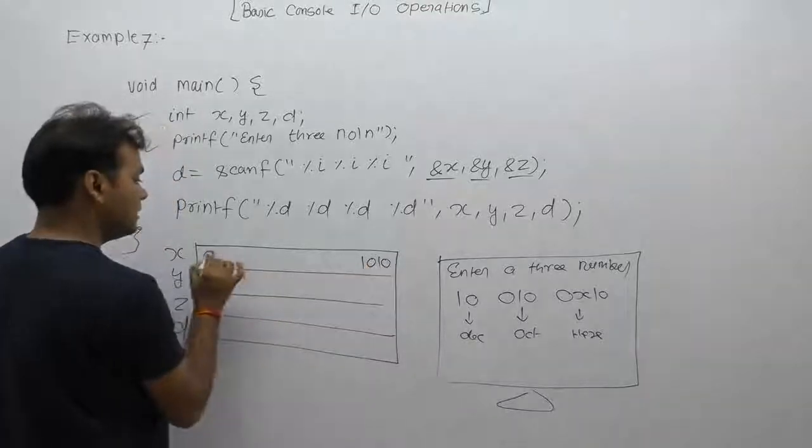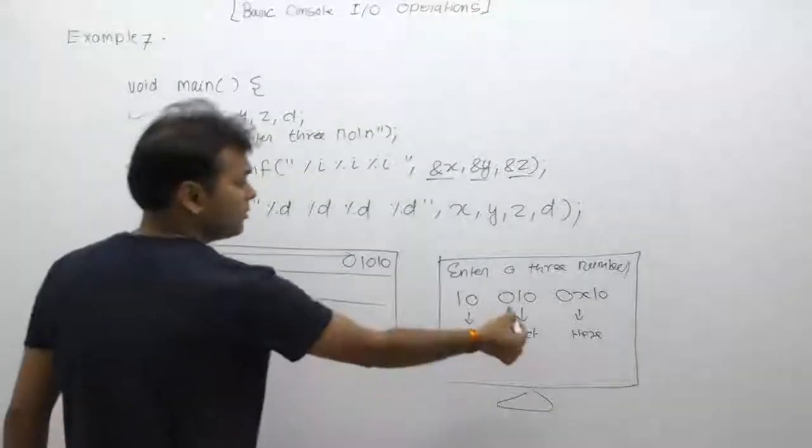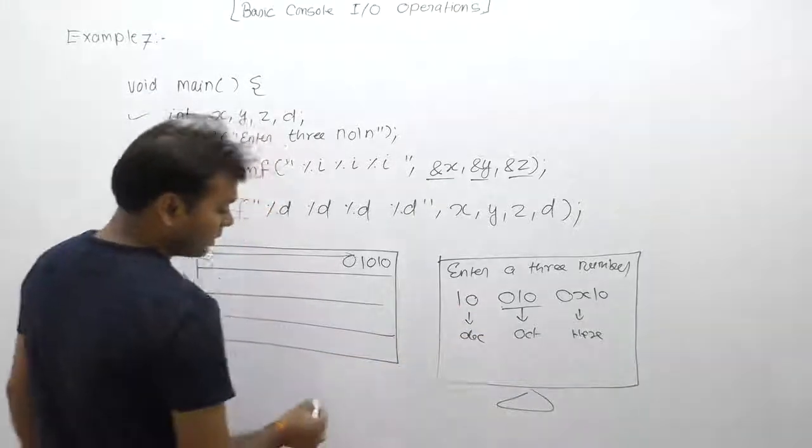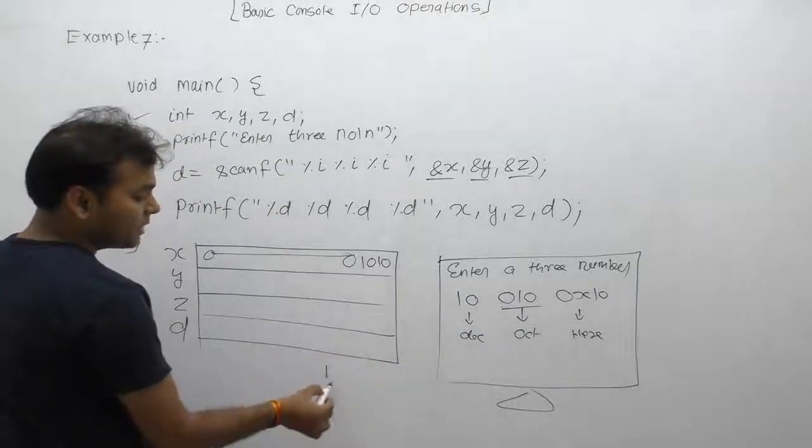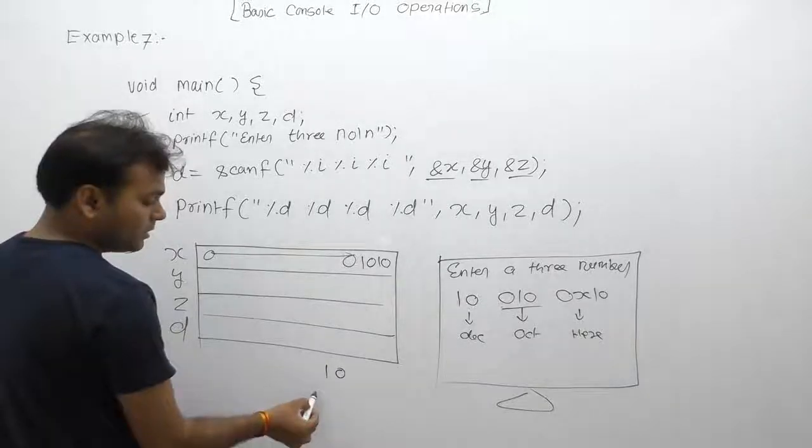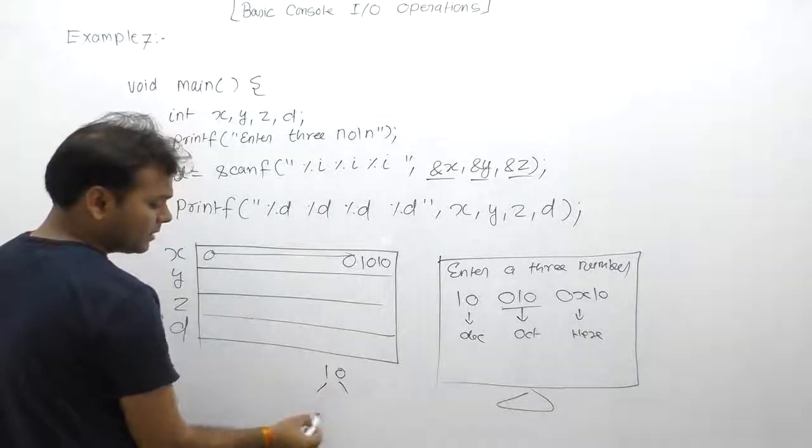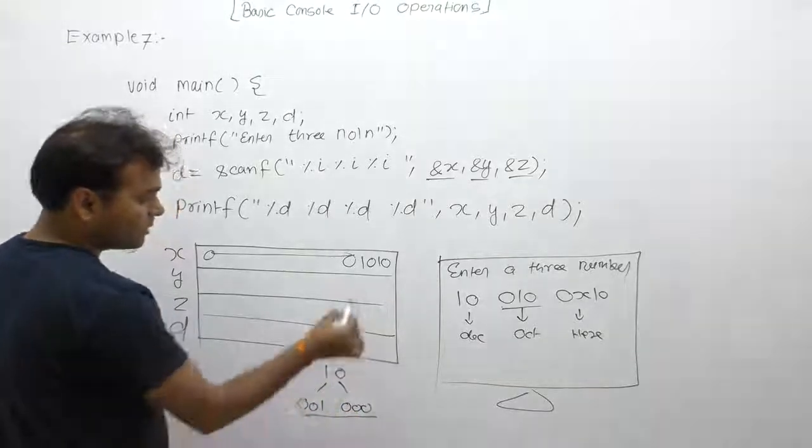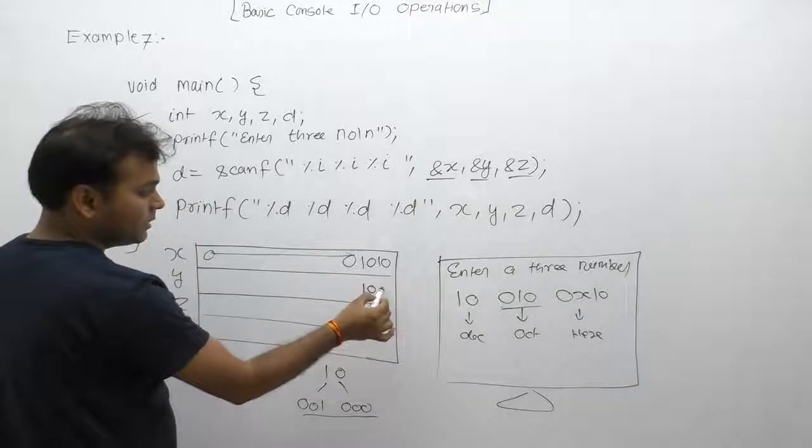Zero one zero z. Zero, zero, zero, zero, zero, zero. Therefore, final value is one, zero, zero.